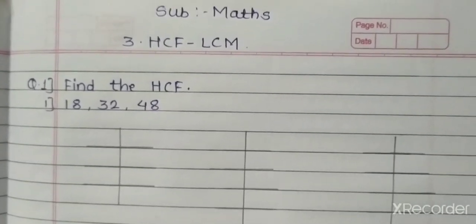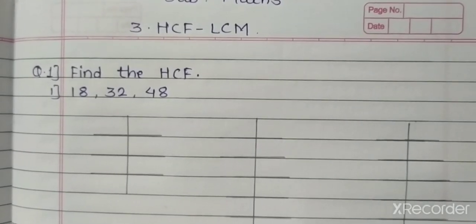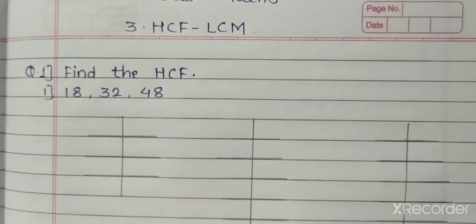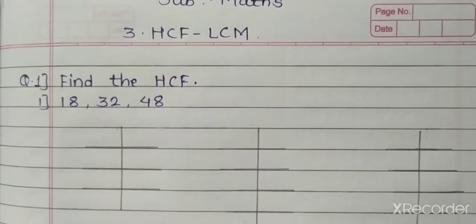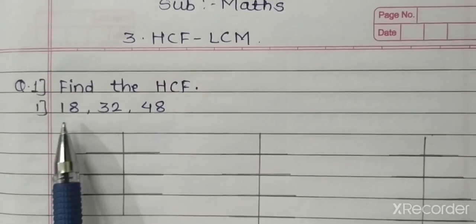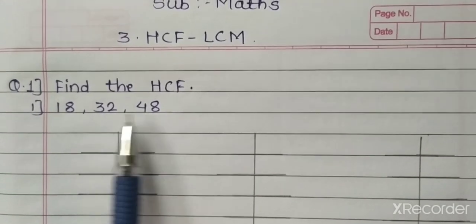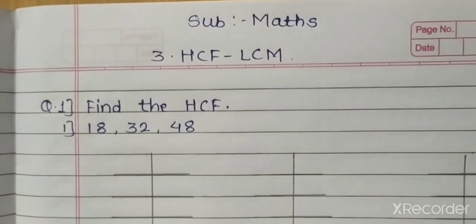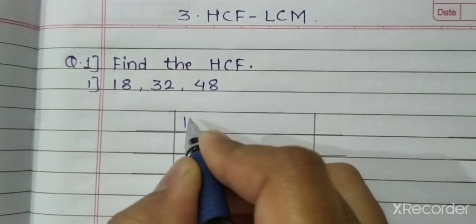Hello students. In the last period we studied how to find the HCF of given numbers. Today we are going to learn how to find the HCF of 3 numbers. Question number 1: find the HCF. The given numbers are 18, 32 and 48. First of all, we find the prime factors of 18 by the prime factorization method.